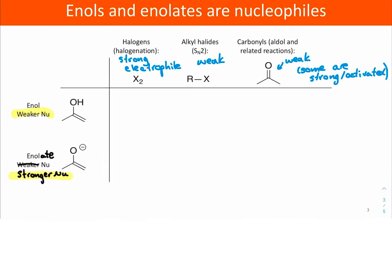When we look at the full picture of these enols or enolates reacting with different electrophiles, the halogens are strong electrophiles and so when they react they can react either with a weaker nucleophile, the enols, or they can react with enolates. So let's dive into the details.